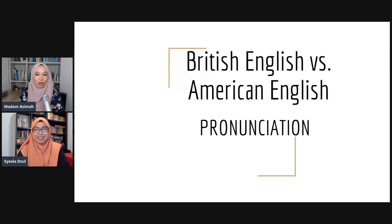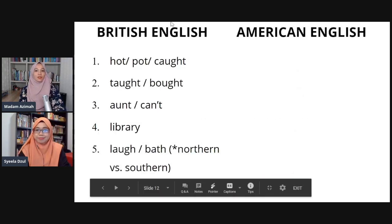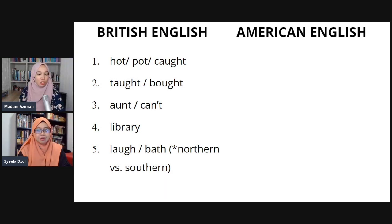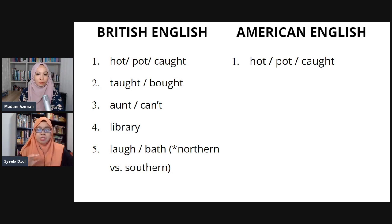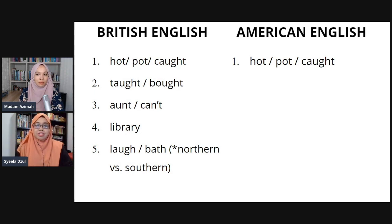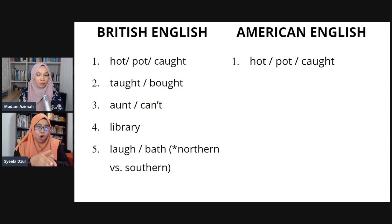The first word is 'hot' as in panas, 'pot', and 'caught'. The vowel is slightly longer in 'caught'. For American pronunciation, the vowel in these words goes like this: 'hot' — it's an 'ah' sound. Hot, hot, and caught. You can hear the difference in the vowel. Even 'caught' — it's not exactly like 'hot', it's in between: caught.